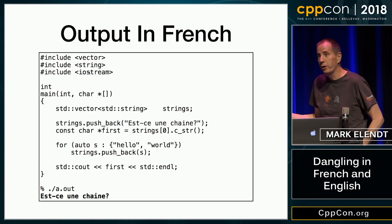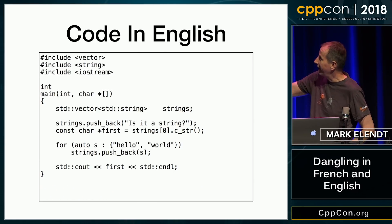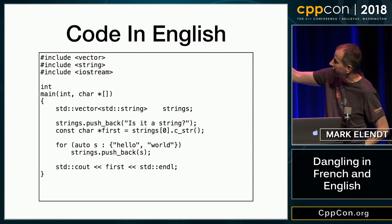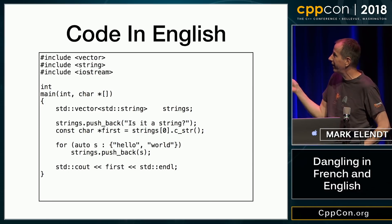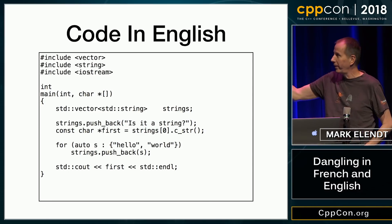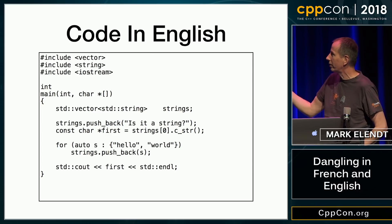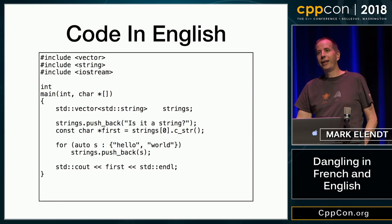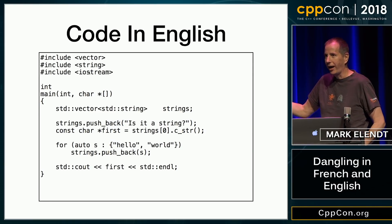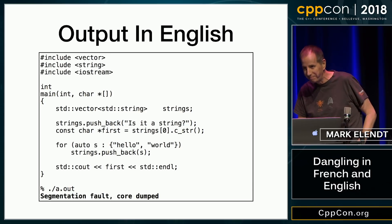So, because we are bilingual, I thought I'd do this in English as well. Instead of pushing back the French, I would push back 'Is it a string?' and then do the exact same thing — take the first reference, then push back 'hello world'. And of course, everyone here knows that when you actually run this code, the English version gives a segmentation fault.